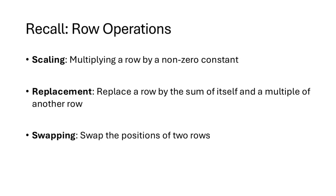First let's recall our row operations from Lecture 4. We have the scaling operation where we multiply a row by a non-zero constant, replacement where we replace a row by the sum of itself and a multiple of another row, and swapping where we swap the positions of two rows.